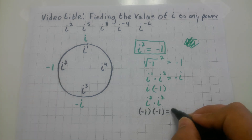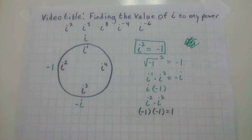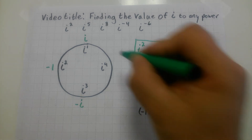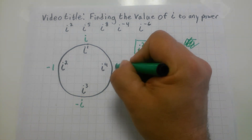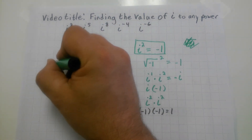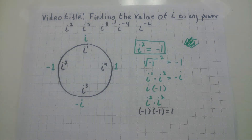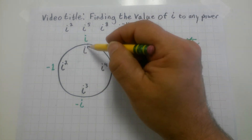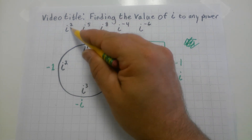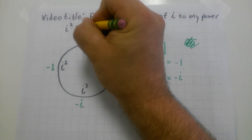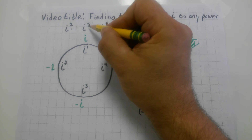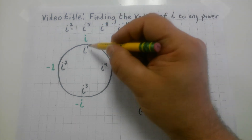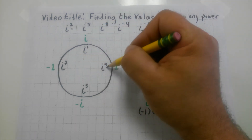Now I'd like to know what i to the fourth is. i to the fourth is i squared times i squared. i squared is negative one, and negative one times negative one equals positive one. So i to the fourth is going to equal positive one. And that's it.